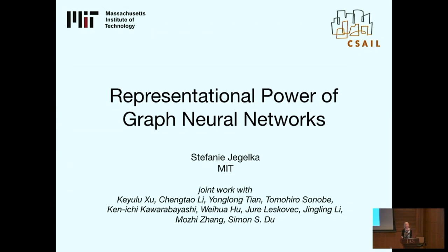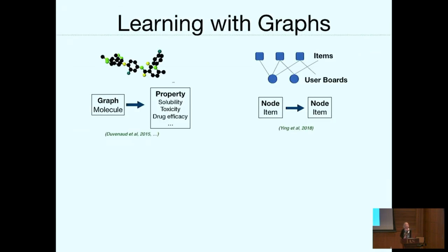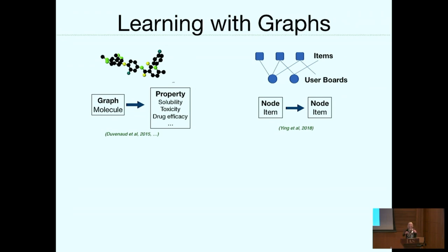So why do we care about learning with graphs and networks? Here are just a few examples. You may have a problem where you want to label each graph in a collection of graphs. The graph could be a molecule, where you have some information about the nodes — the atoms and the bonds — and you just want to put a label. Maybe you want to predict solubility, toxicity, or any other properties of this molecule. At the end of the day, you want a method that takes in a graph and predicts a label.